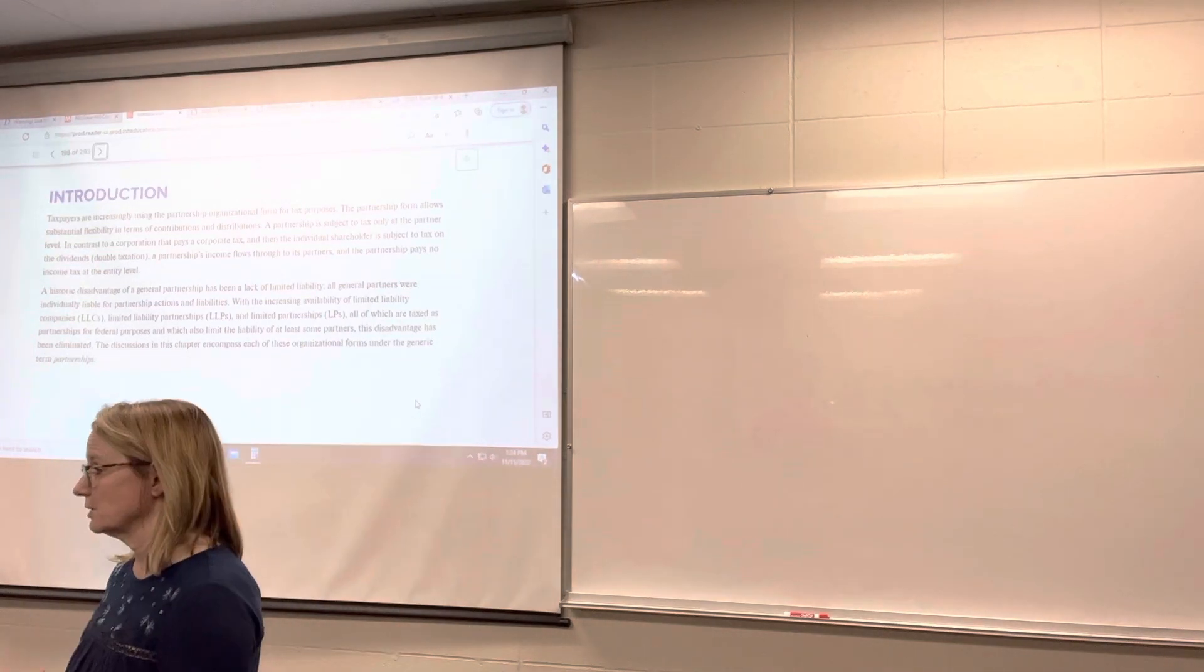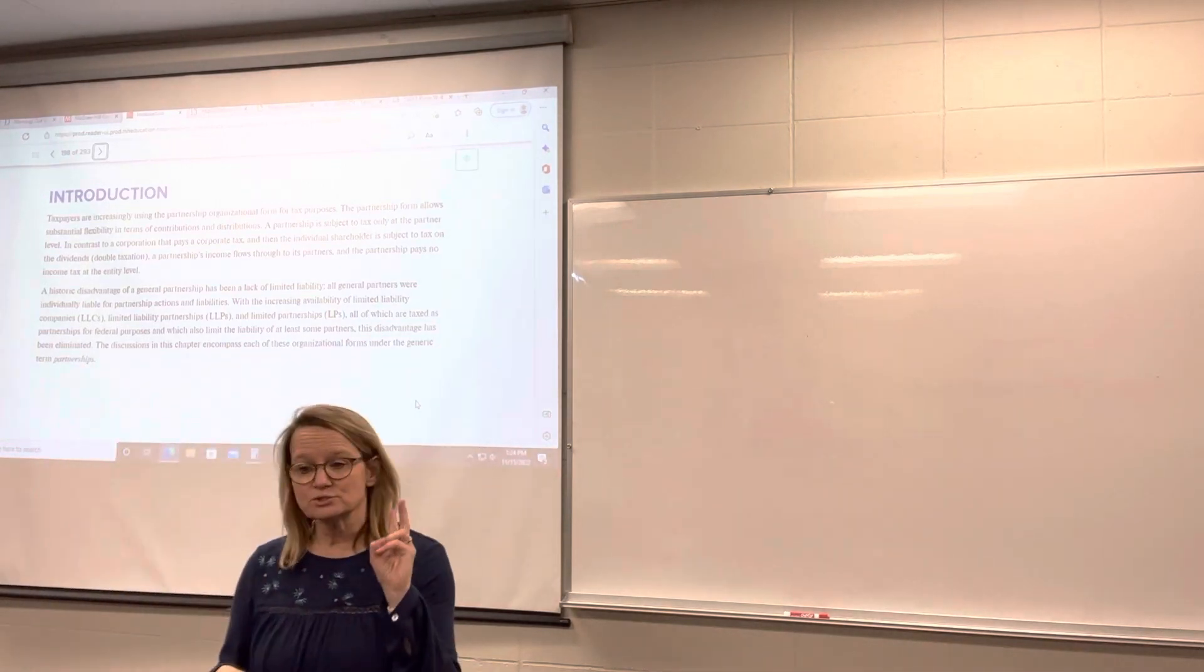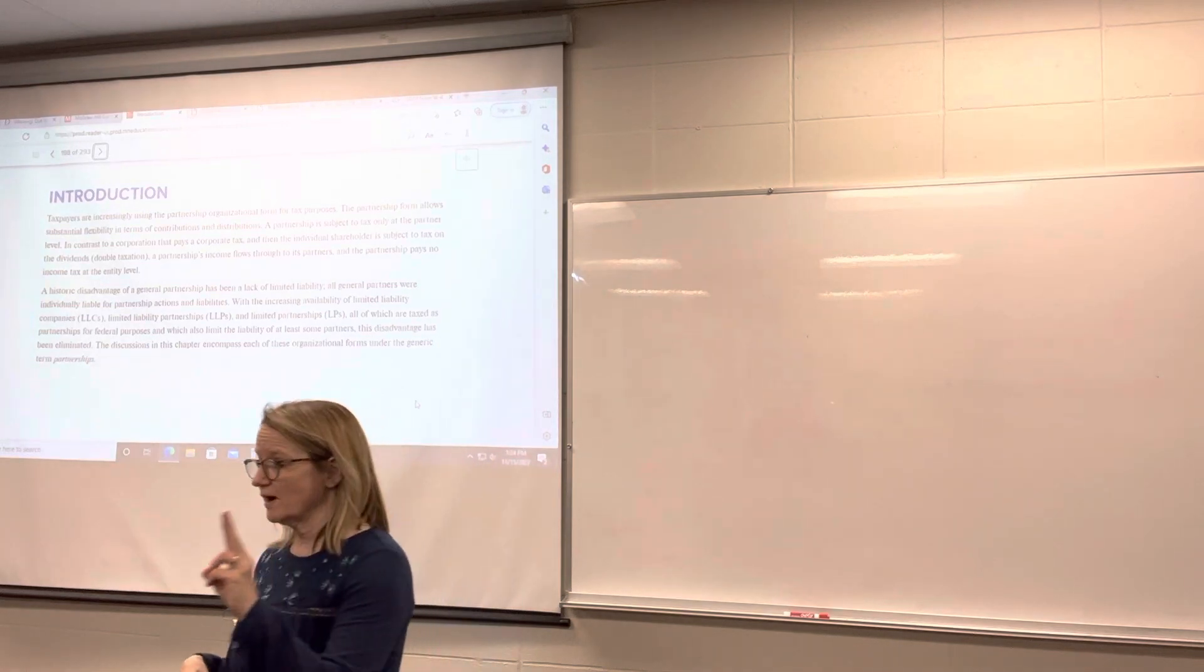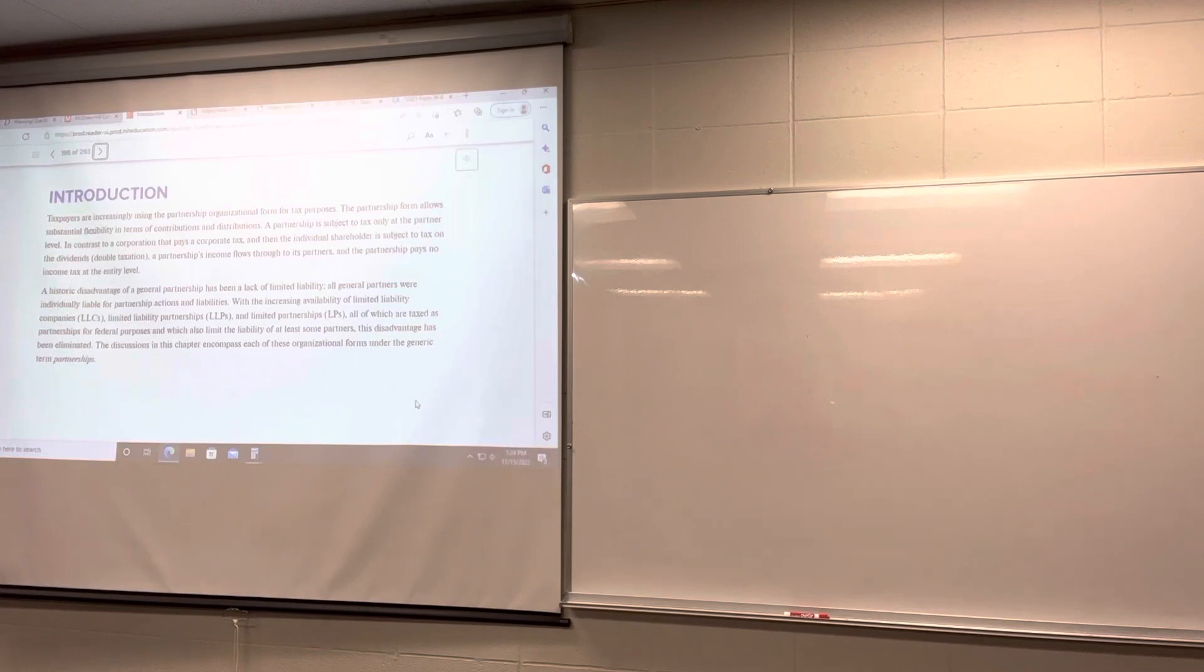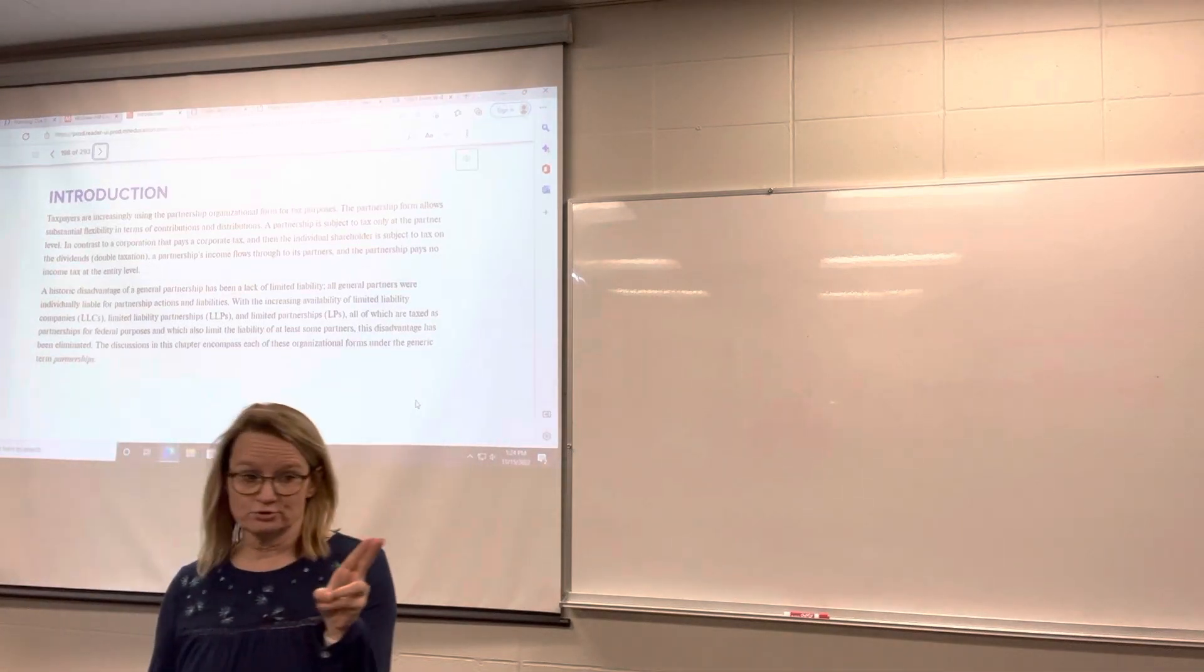For a partnership, you don't have to do anything to form a partnership. All you have to do is go in business with another person. Partnership is always going to be at least two people, and it could be a husband and wife. Remember, they can't have a sole proprietorship together because the sole proprietorship is only one person. But if a husband and wife go into business together, they automatically form a partnership.